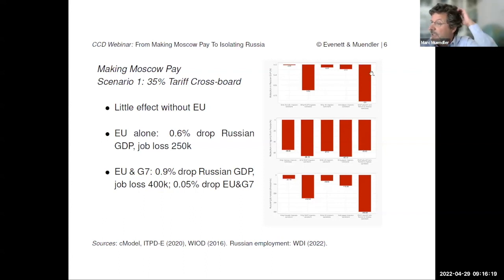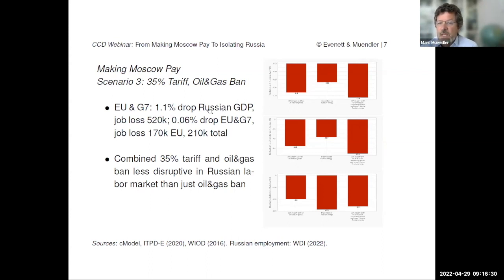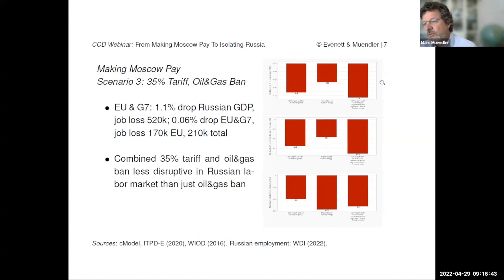What this suggests is that just a few countries acting is not going to do much, because Russia's economy will respond. The relocation of labor — workers moving to other industries in Russia — is actually a sign of the flexibility of the industries, and the impact is not as large. If we followed the United States and banned oil and gas, modeled as a 100% tariff, you get a little more power. The three bars here show scenario one — just the 35% tariff on everything — then the oil and gas embargo alone, and the third, the combination of the two.